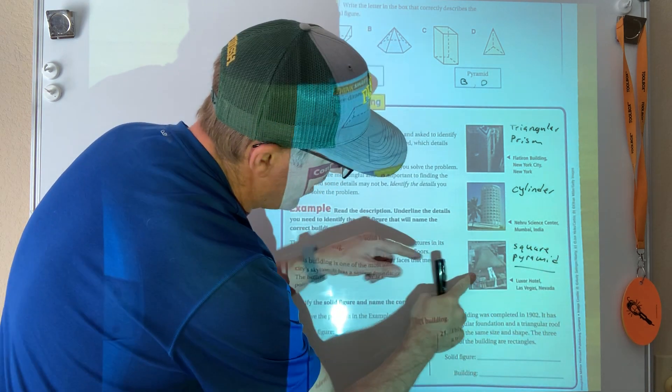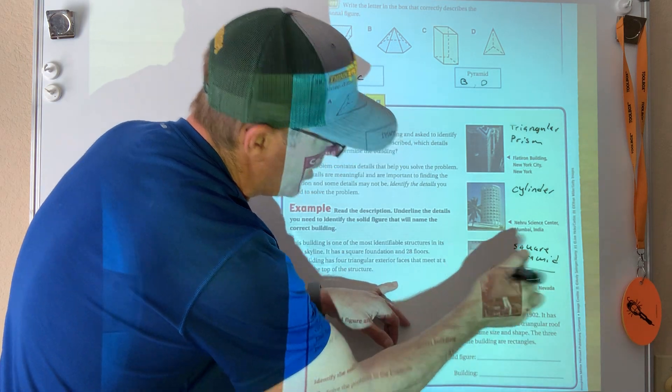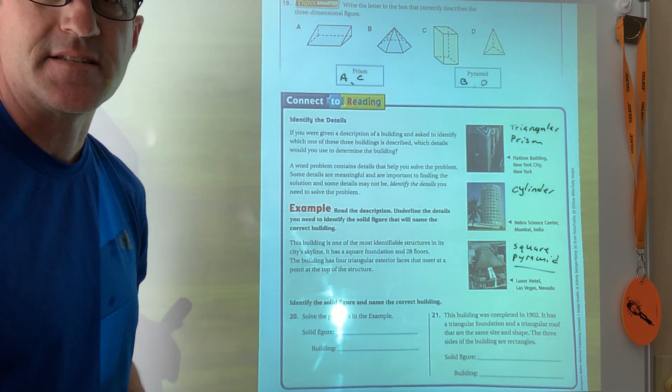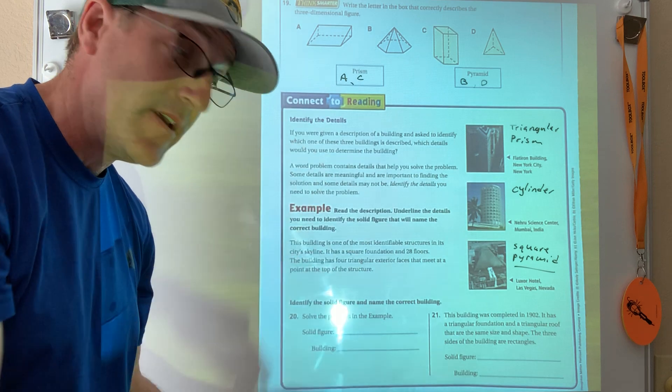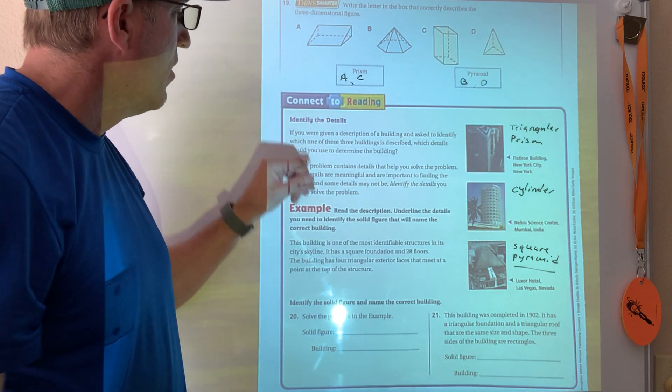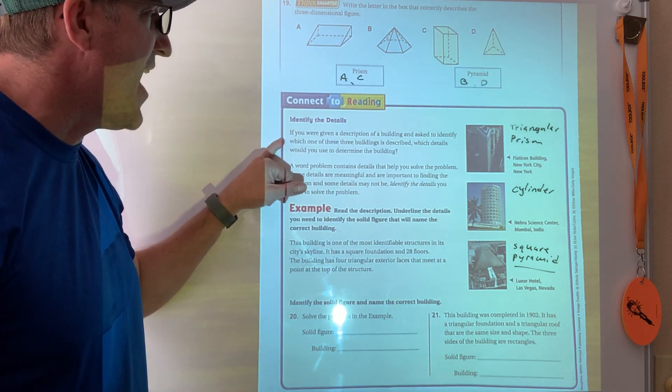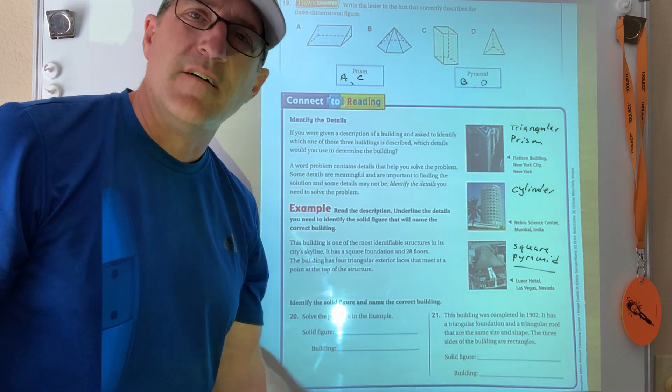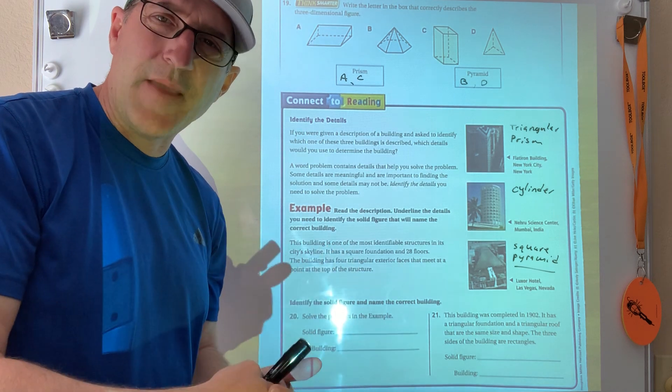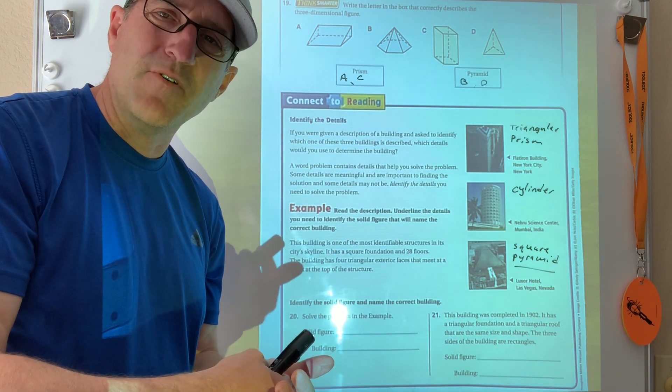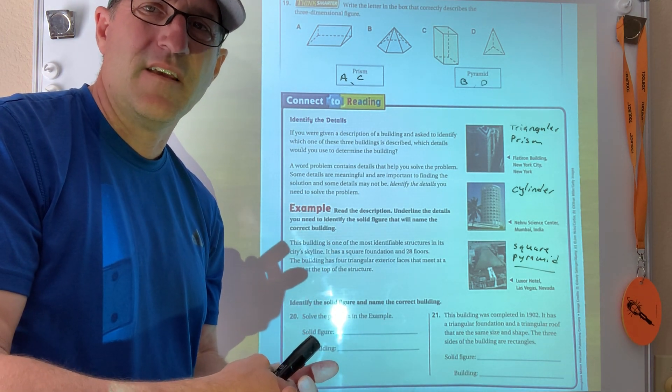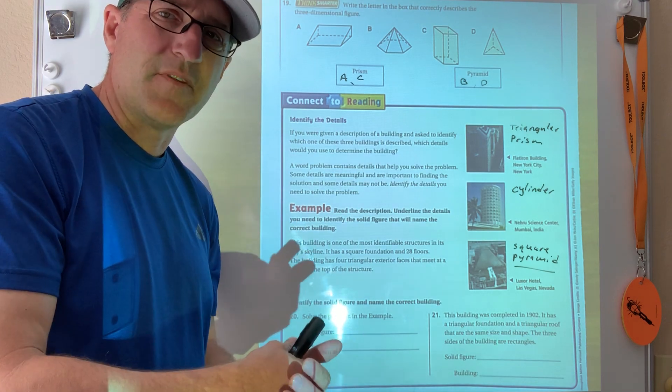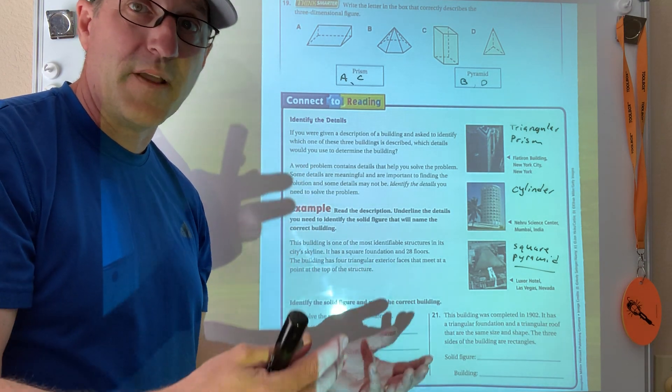All right, so if I look at it, one, two, three. You know there's one on the back side, it's kind of hard to see. It's not like the ones that they draw where you can see through them. Okay, so if you were given a description of a building and asked to identify which one of these three buildings is described, which details would you use to determine the building? What are the shape of the faces? Does it come to a point or not? Okay, so that's what I'm going to look at. What are the shape of the faces? Do I have triangles, do I have pentagons, what do I have, what are the shapes, okay, and how are they put together?